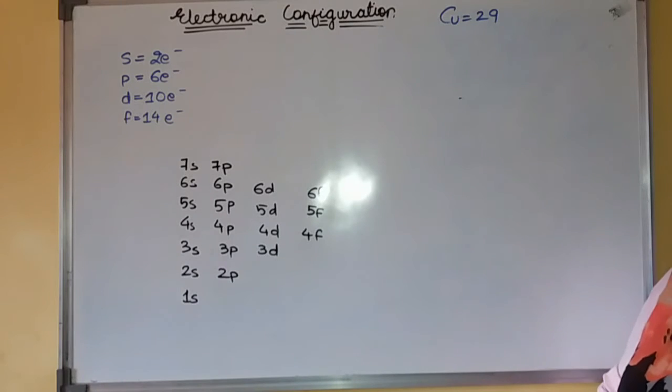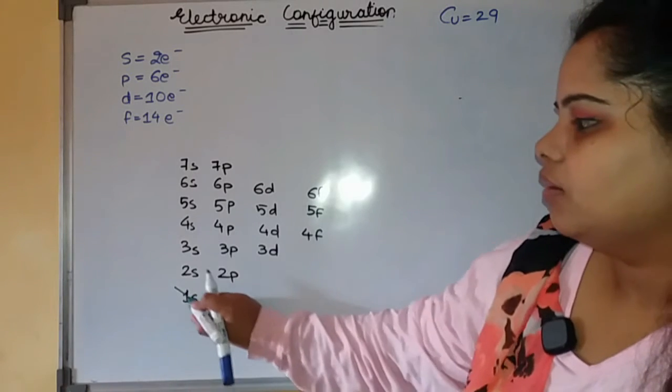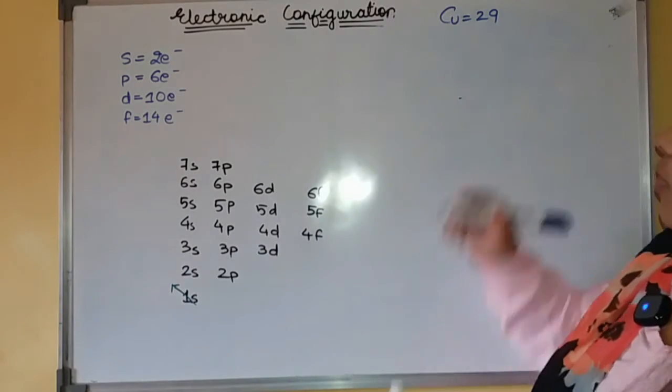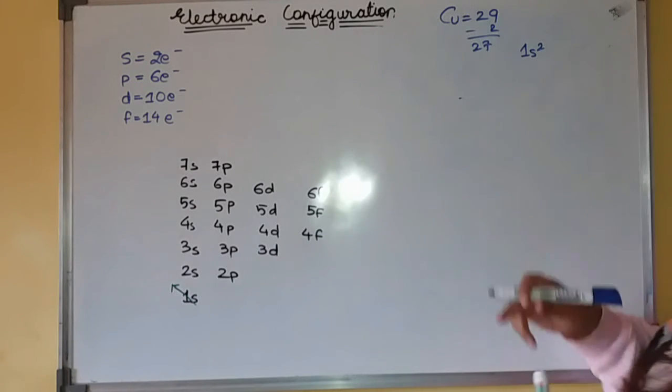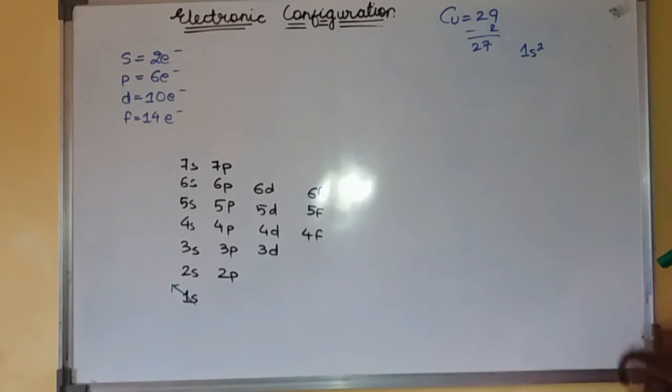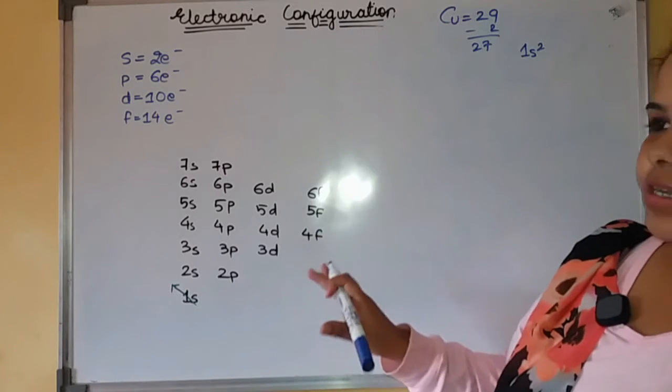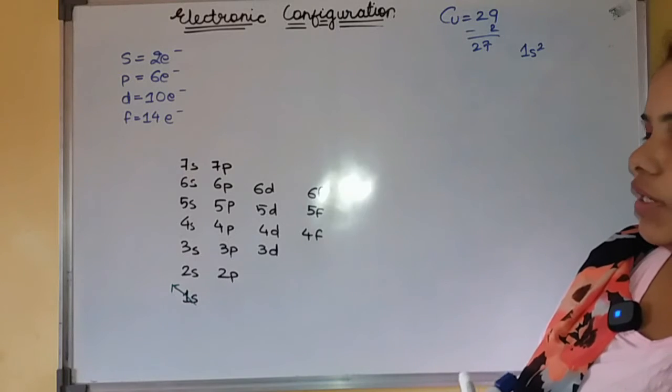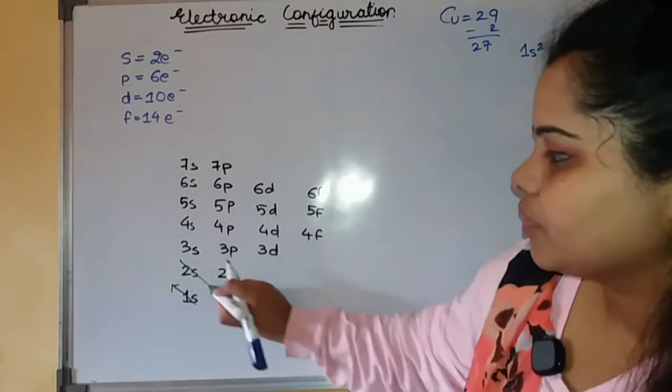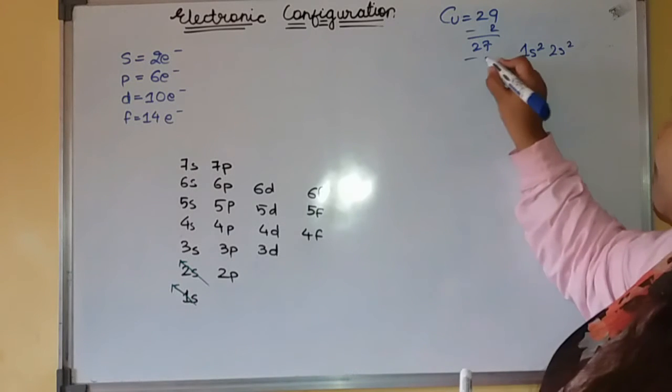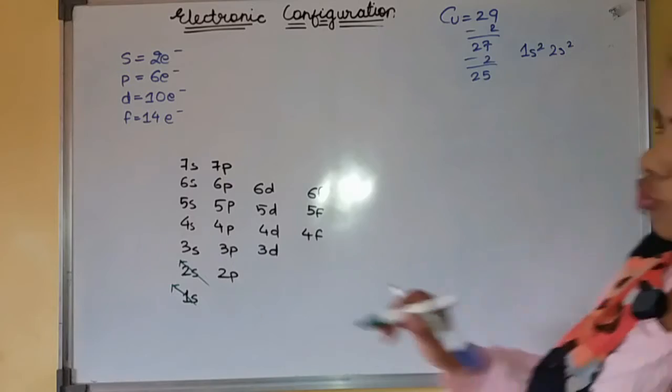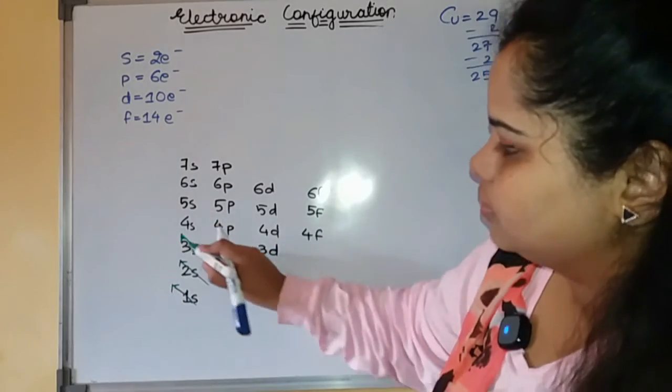Let us take a slightly bigger atomic number containing element. We have copper here. Again, we will start from filling up 1s. So we will write down here 1s² and subtract 2. This helps us to keep track of how many electrons we are remaining with and until when we have to carry on this filling of electrons in the diagram.